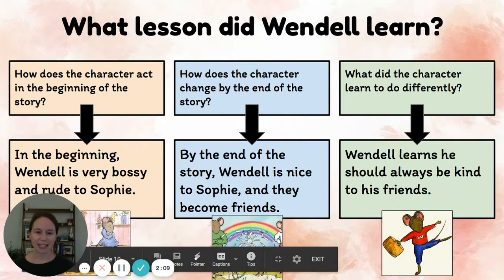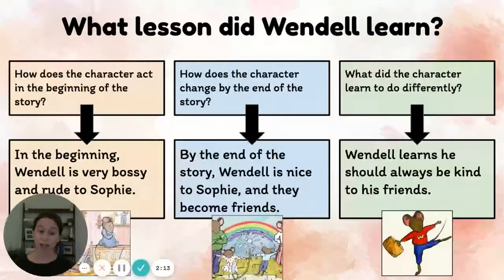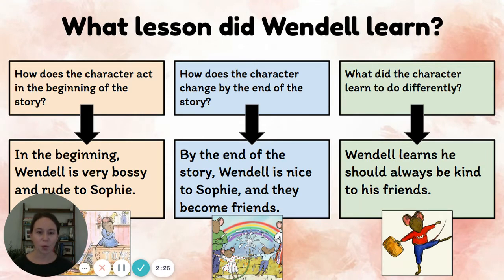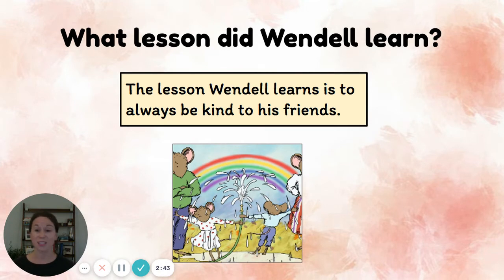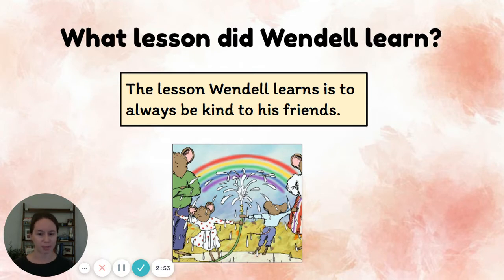Let's think about the last question: what did the character learn to do differently? I think Wendell learned that he should always be kind to his friends. That last question — what did the character learn to do differently — is pretty much the same thing as asking what is the lesson the character learned. The lesson Wendell learns is to always be kind to his friends. I know Wendell learned this lesson because in the beginning of the story he is not kind to Sophie, but by the end he changes and learns that being kind to Sophie is much better than being rude and bossy.